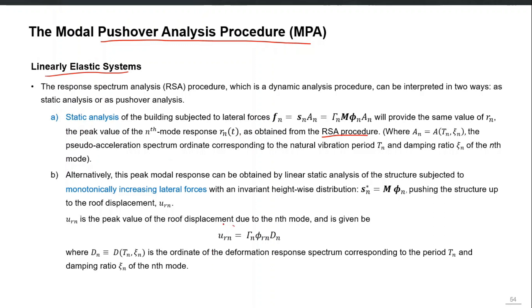In RSA, we calculate the peak roof displacement of the system using this equation, and D_N actually comes from the response spectrum of the earthquake — it can be the design spectrum from a particular building code for new buildings, or the elastic response spectrum for an existing earthquake. You can directly pick the D_N value from that response spectrum and convert it into the peak roof displacement of your system.